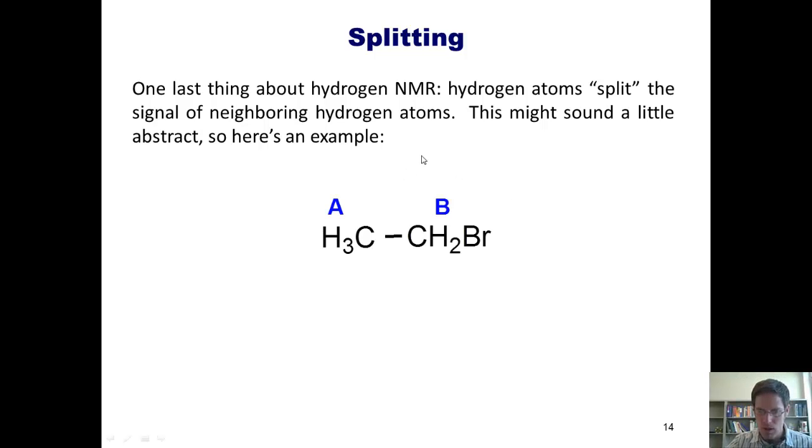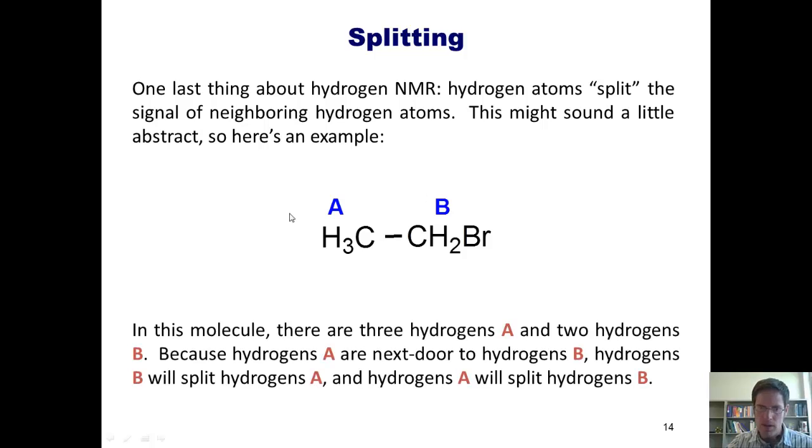In this molecule, there are three hydrogens A and two hydrogens B. Because hydrogens A are next door to hydrogens B, hydrogens B will split hydrogens A, and hydrogens A will split hydrogens B. I know you're probably thinking that sentence was really long, but let's consider an example to put all of this stuff together.